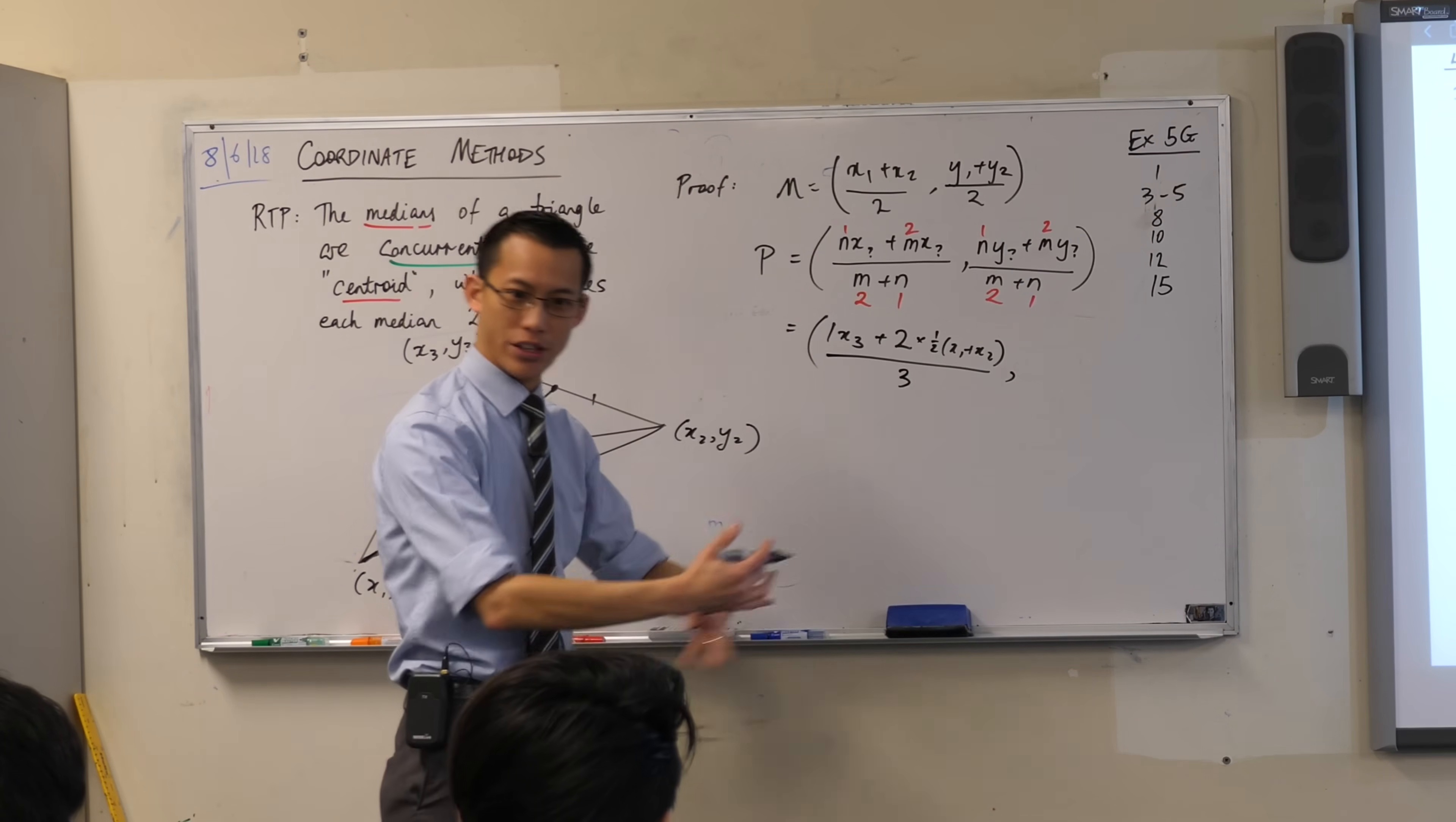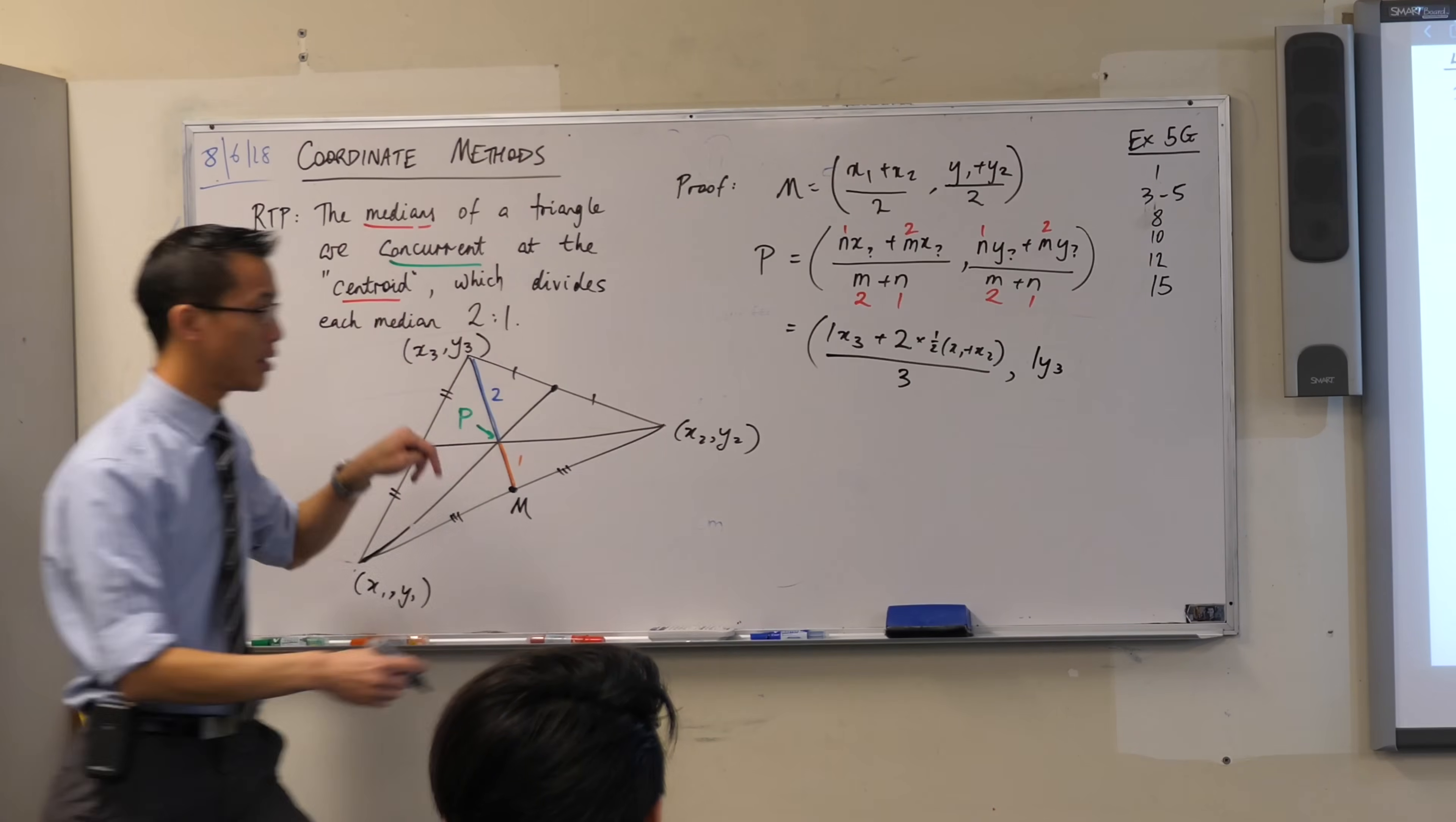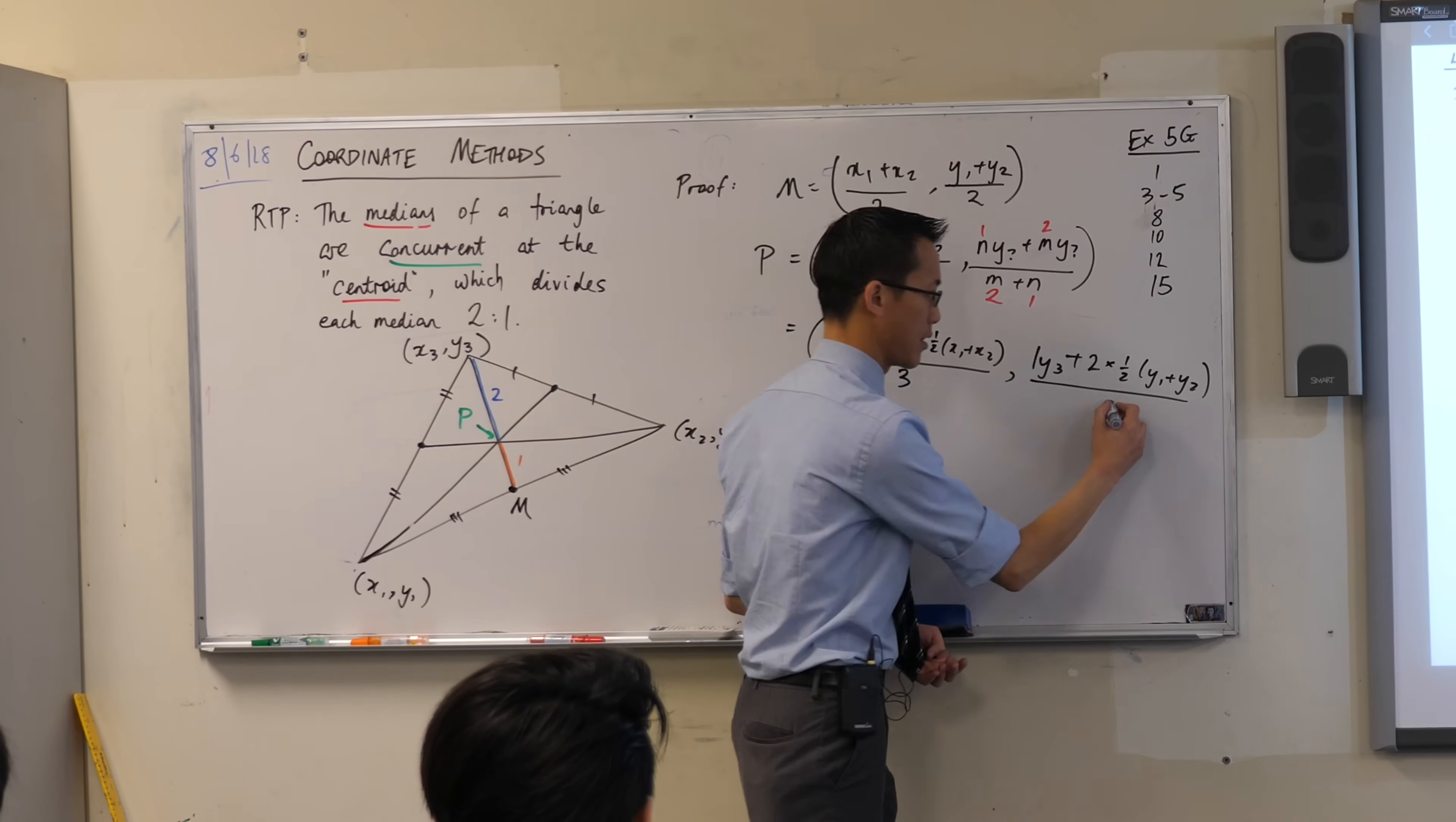And then I'm just going to rinse and repeat for the y-coordinate, right? I've got 1 from the ratio. It's y3 because you told me to start up at this point over here. Plus 2. That comes from the ratio. Times half. Here's the other coordinate on the bottom, right? All divided again by 3. Fantastic.